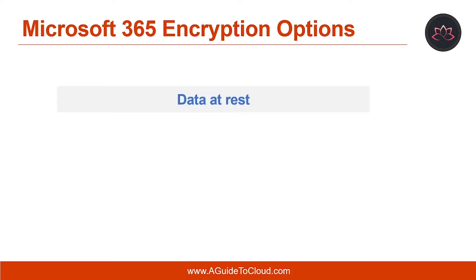Let me explain these two concepts in detail. First, let's understand what is data at rest. Examples of data at rest include files that have been uploaded to a SharePoint library, Project Online data, documents that have been uploaded in a Microsoft Teams meeting, email messages and attachments that are stored in folders in your Microsoft 365 mailbox, and files uploaded to OneDrive for Business.